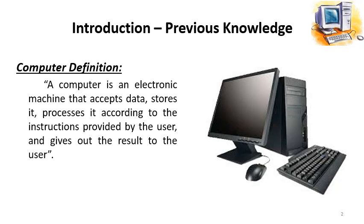The second function is that a computer is capable of storing the data or information. The third most important function is that it is capable of processing the data given to it as input, according to the instructions — meaning the programs — provided by the user. Finally, it produces the output, which is the result required by the user, and the end product of all the processing done by the computer system.